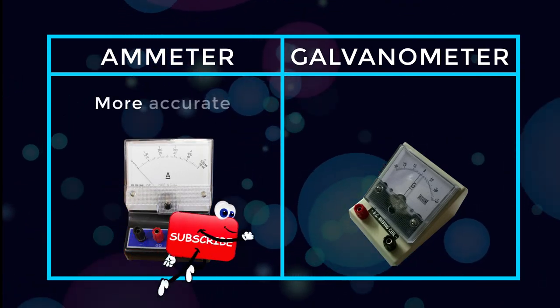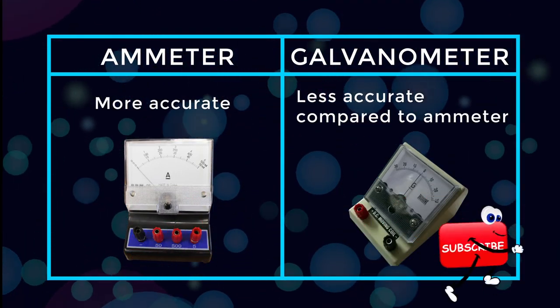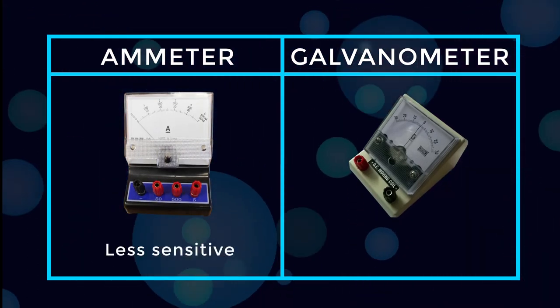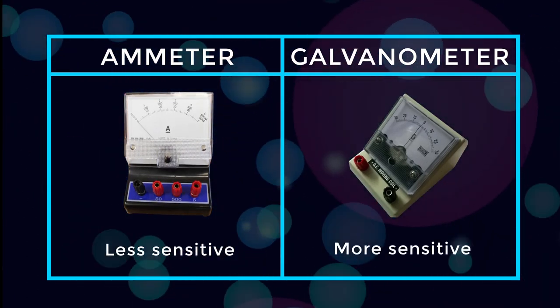Ammeter is more accurate, whereas galvanometer is less accurate compared to ammeter. Ammeter is less sensitive. Galvanometer is more sensitive.